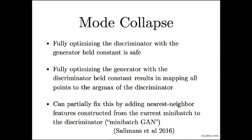We can partially fix mode collapse by adding mini-batch features to the discriminator, where it looks at an entire mini-batch of samples at a time rather than a single sample. If those features measure things like distance to other samples, the discriminator can detect if the generator is starting to collapse. Instead of encouraging every sample to move toward the single most likely point, the mini-batch as a whole has to look realistic with correct spacing between different samples. We call this mini-batch features for GANs, and it was an idea from Tim Salimans that we submitted in a paper to NIPS from OpenAI.